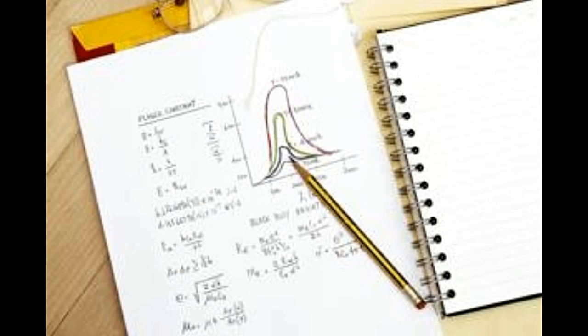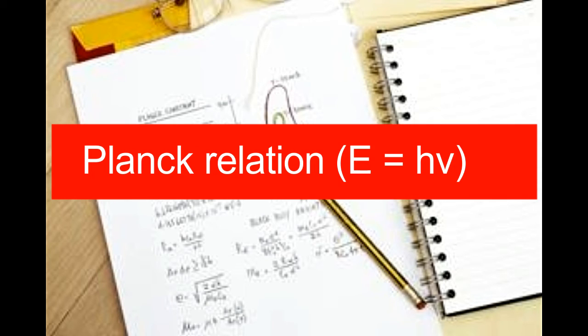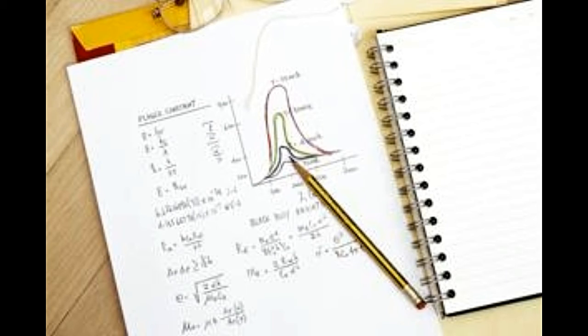Planck relation E equals h nu, where E is energy, h is the Planck's constant and nu is the frequency of radiation, implied that energy could only be traded in packets or quanta. This discretization brought in by energy quanta was a fundamental shift in thinking, inconsistent with classical intuition of physicists at the time. That's why the theory came to be known as quantum physics.